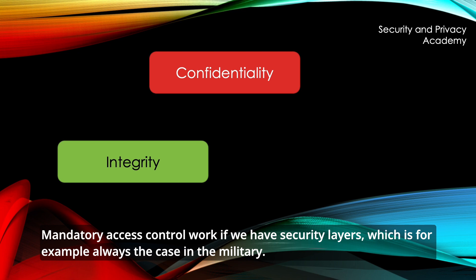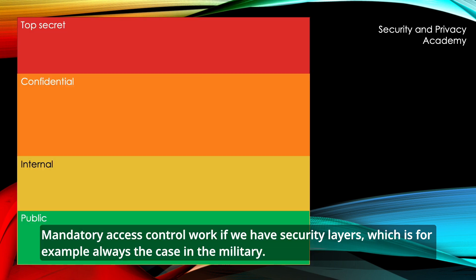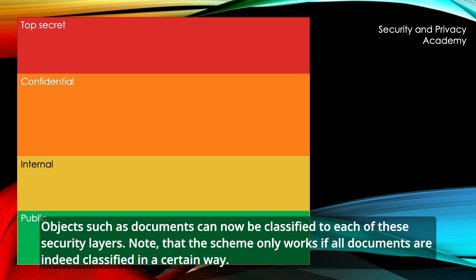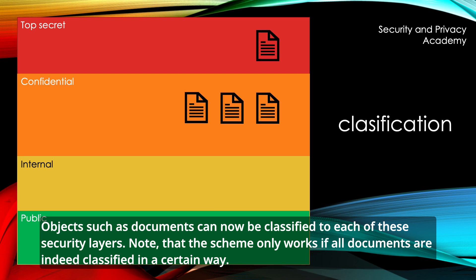Mandatory access control works if we have security layers, which is always the case in the military. These can be individual to each organization, but for example we could have top-secret, confidential, internal and public. Objects, such as documents, can now be classified to each of these security layers. Note that the scheme only works if all documents are indeed classified in a certain way.